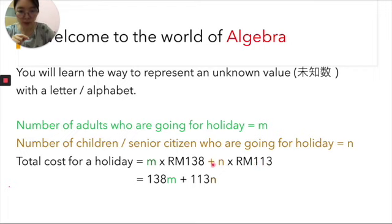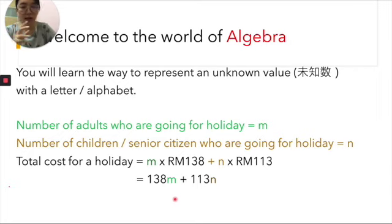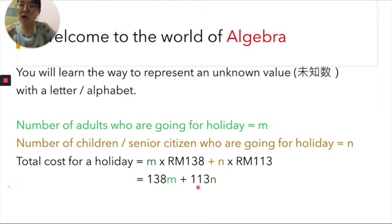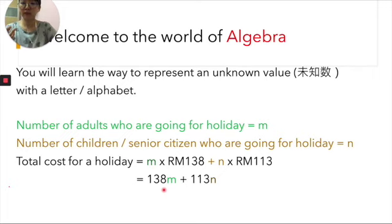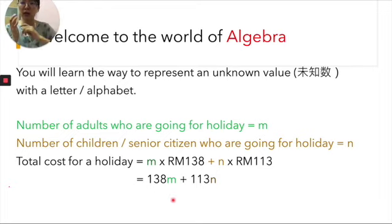So the formula I can come up with is 138 multiplied by m, plus 130 multiplied by n. For any family, you just have to calculate how many adults times 138, plus how many children or senior citizens times 130, and you will get the total cost for a family holiday. This is how algebra plays a role in our world today — it helps us calculate in a more convenient and easy way.